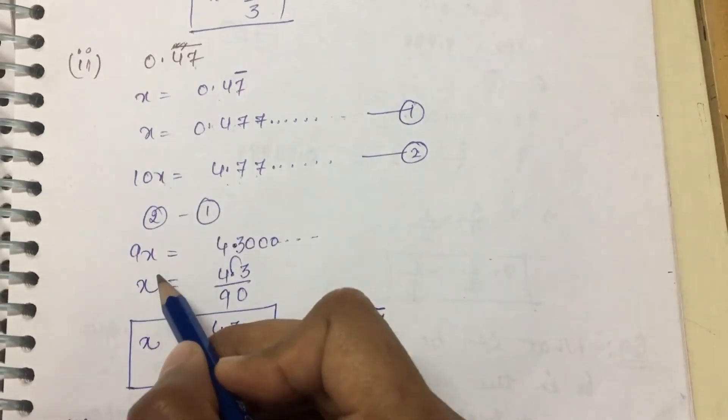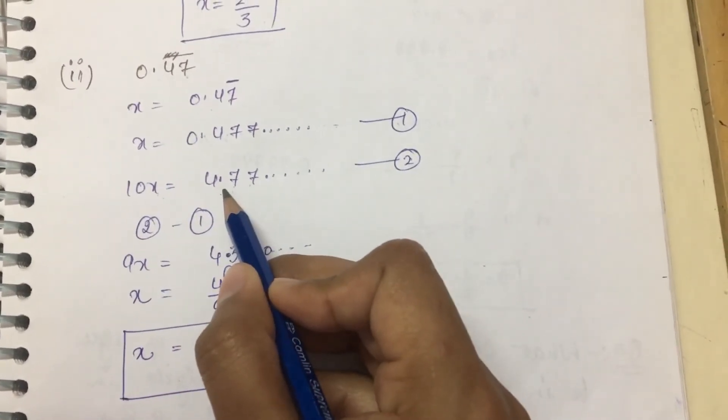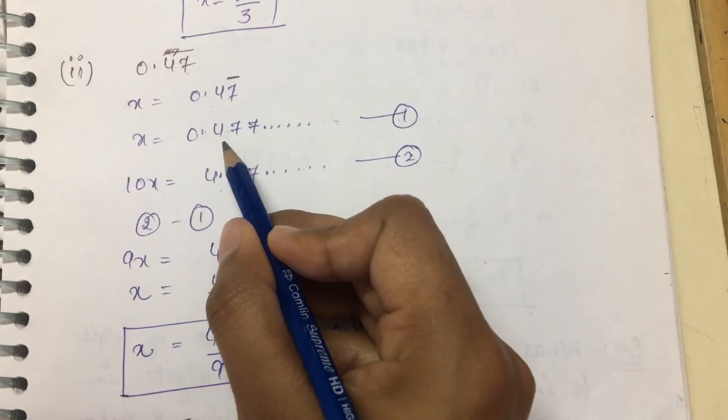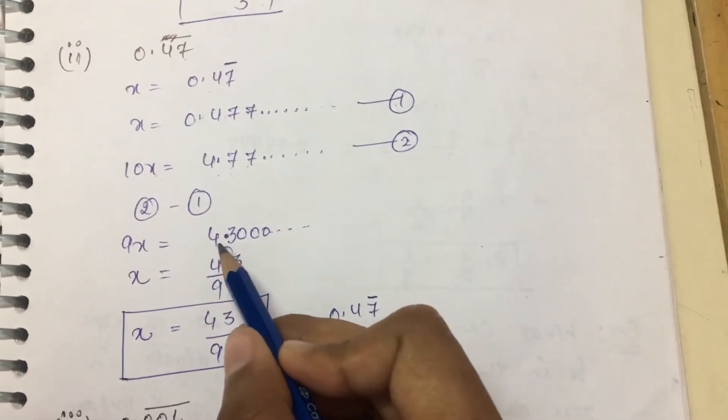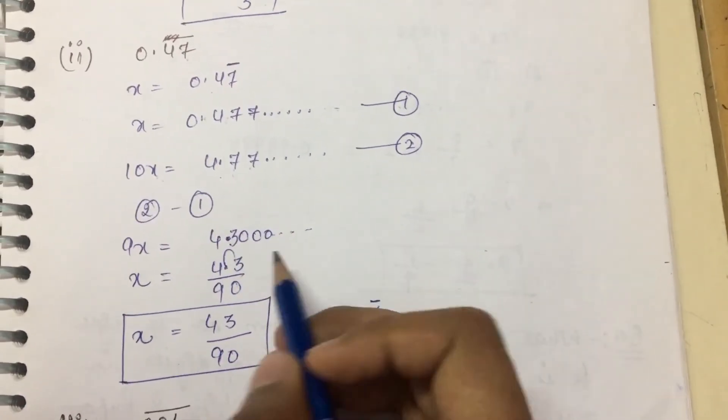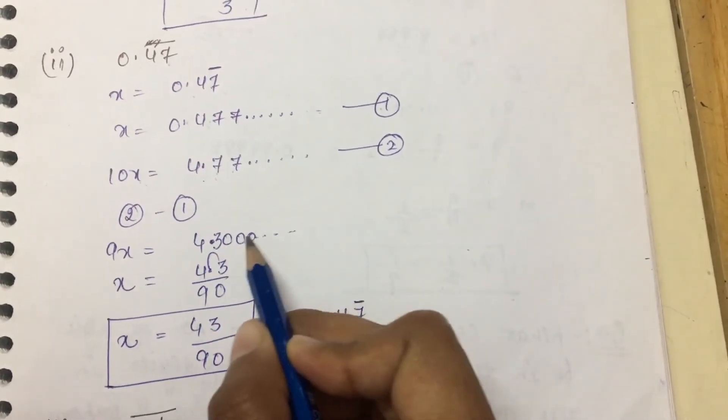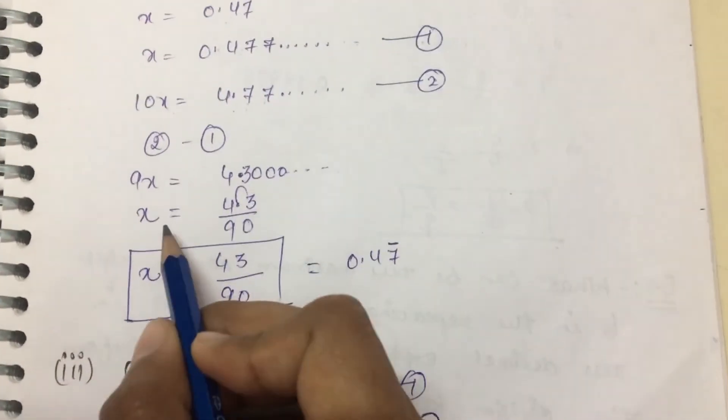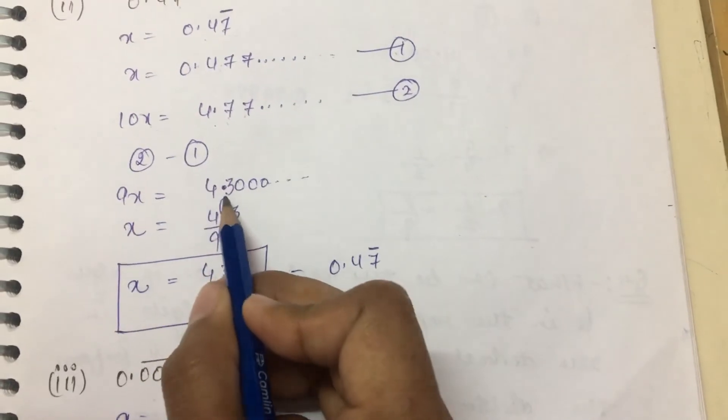We subtract the first from the second equation. So we get 9x equals 4.77 minus 0.47, which equals 4.30. After the decimal this digit is 0.